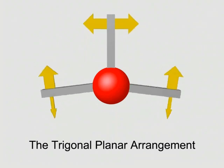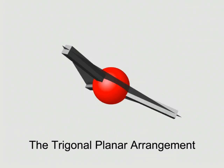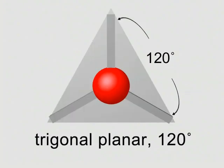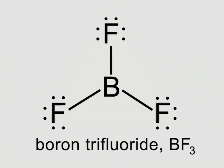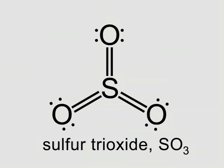Three negative groups attached to a central atom attain minimal repulsions in the trigonal planar arrangement, which has an ideal bond angle of 120 degrees. We observe this angle in molecules with three identical groups, such as boron trifluoride and sulfur trioxide.